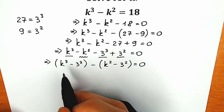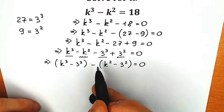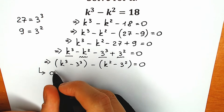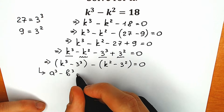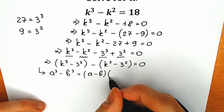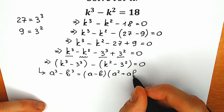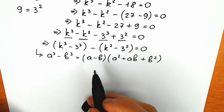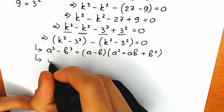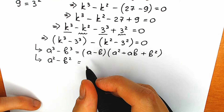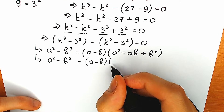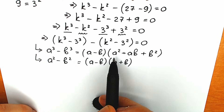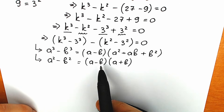We really need to know this school formula. Difference of cubes: a cubed minus b cubed equals a minus b, times a squared plus ab plus b squared. And the second formula, maybe the well-known formula everyone knows: difference of squares, a squared minus b squared equals a minus b times a plus b.